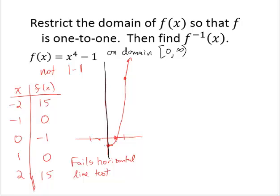Now, on that restricted domain, I can find an inverse. So if I have f(x) equals x to the fourth minus 1, I can think of that as y equals x to the fourth minus 1. And I'll solve for x. I'll add 1. y plus 1 equals x to the fourth.